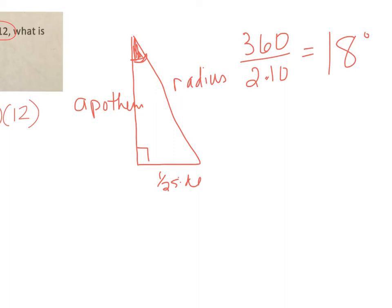Now down here I also know what half the side length is. If I have a side length of 12, that means this is 6. For this right triangle, this is the opposite side and this is the adjacent side. So I can find a cosine relationship which says cosine of 18 equals 6 over the apothem.